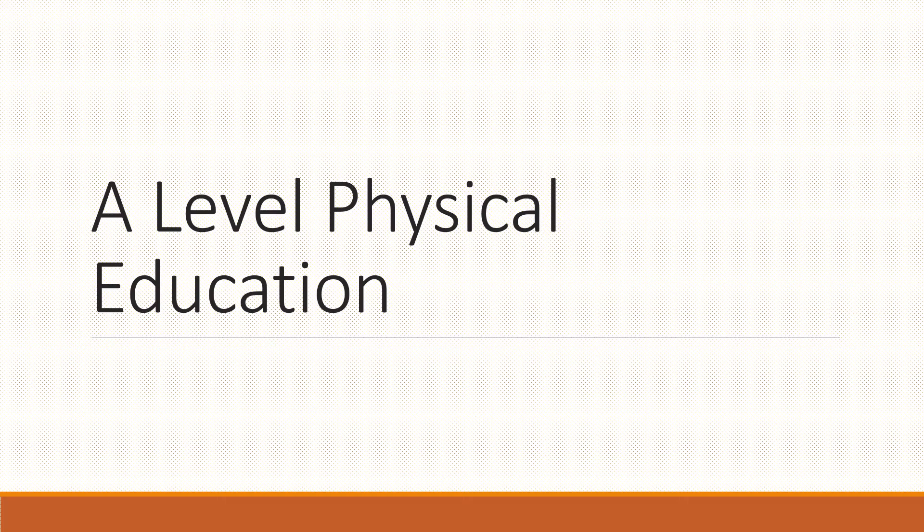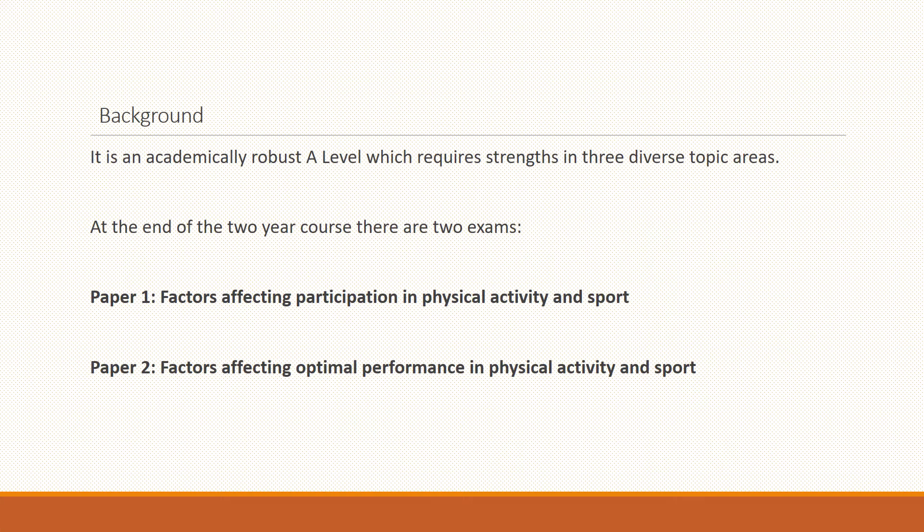Hello, this is a presentation for A-Level Physical Education. A little bit of background to start with. A-Level PE is an academically robust A-Level and it is 70% theory with 30% practical. At the end of the two-year course there are two exams, both of which are two hours: Paper 1 and Paper 2.